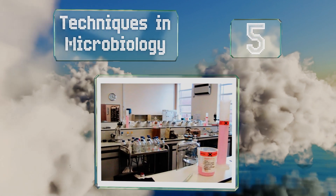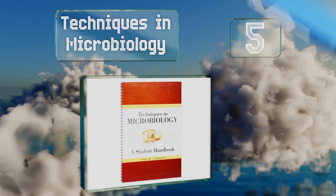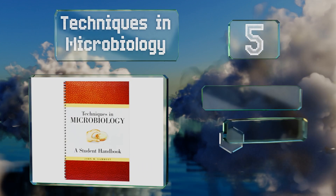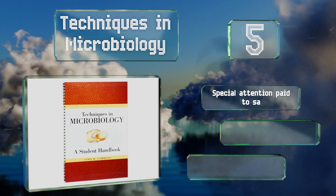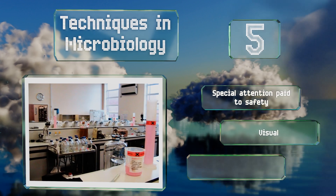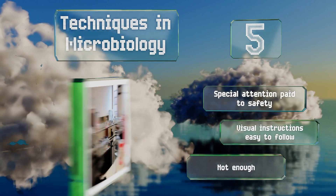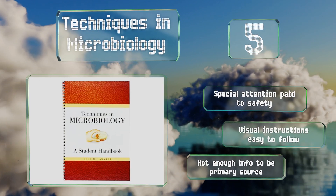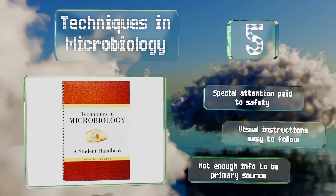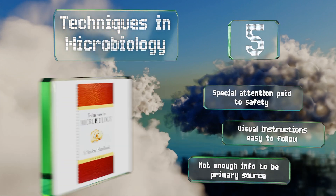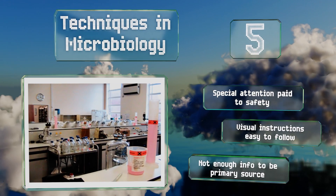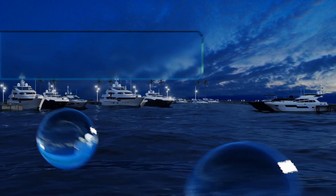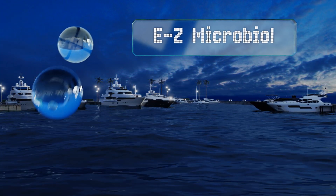Halfway up our list at number 5: one thing autodidacts miss from the classroom experience is guidance on how to avoid accidentally contaminating specimens. Techniques in Microbiology walks readers through setting up a lab and the procedures needed for proper analysis. Special attention is paid to safety and the visual instructions are easy to follow, but note that this doesn't have enough information to be your primary source.